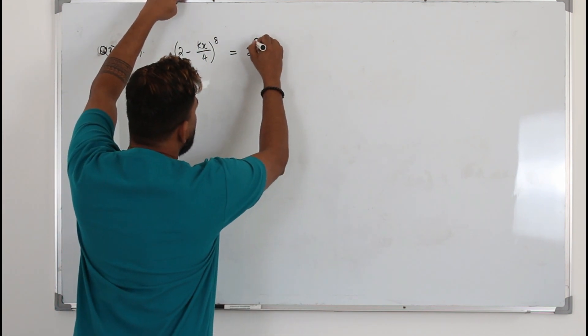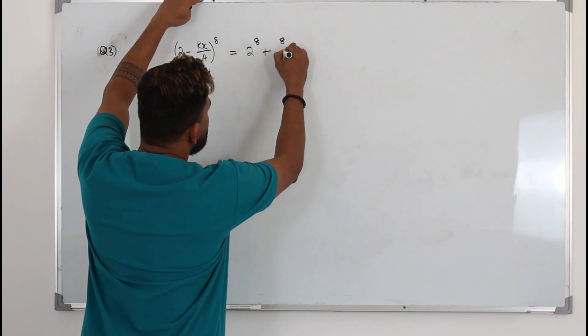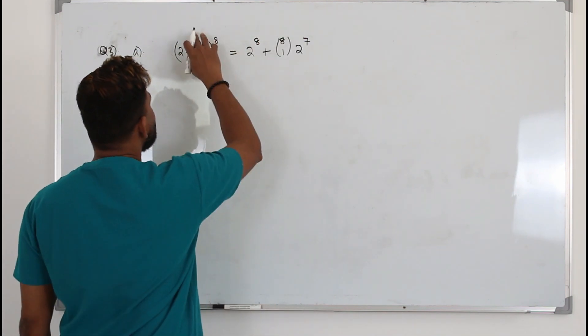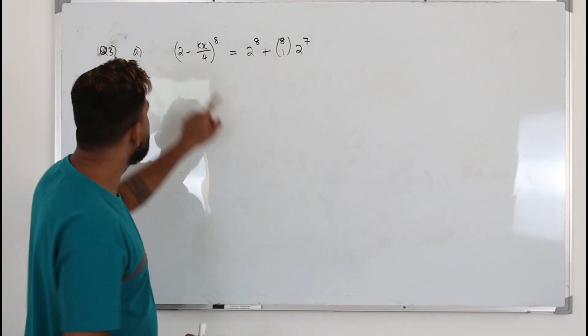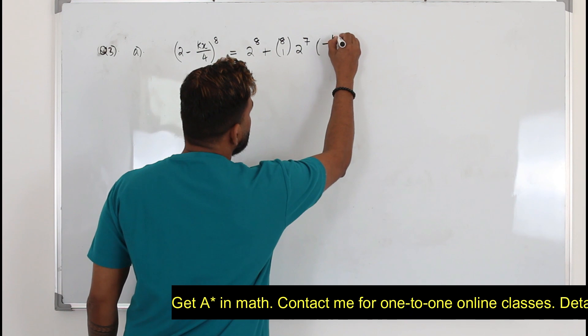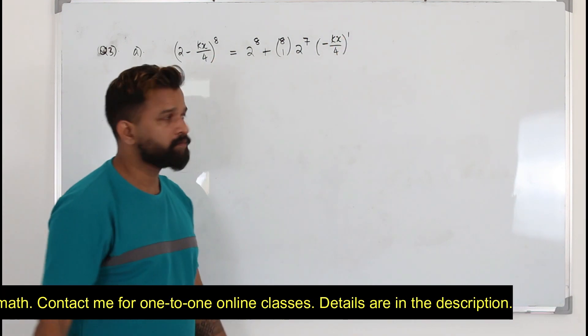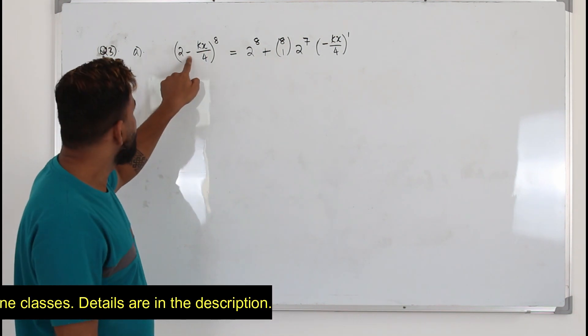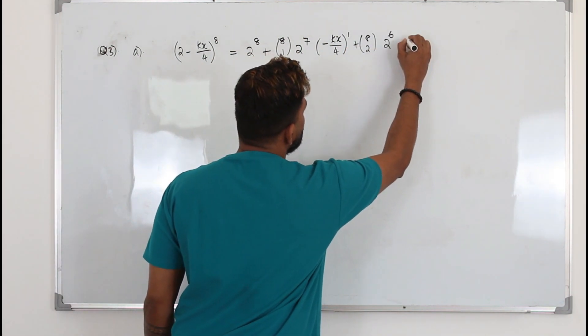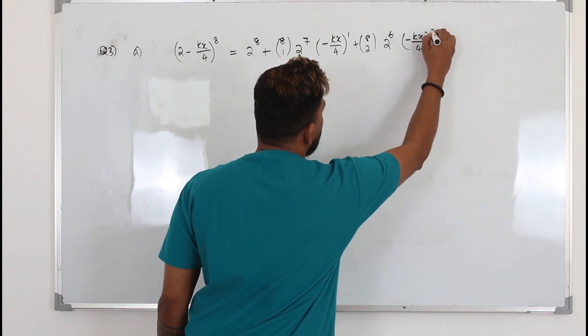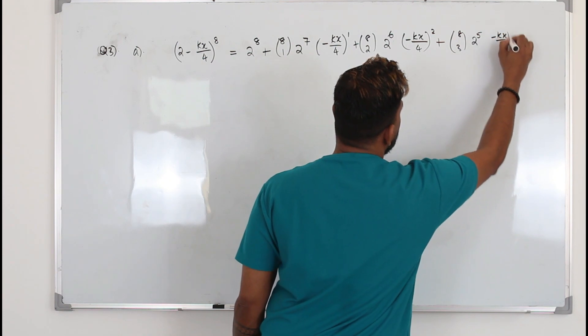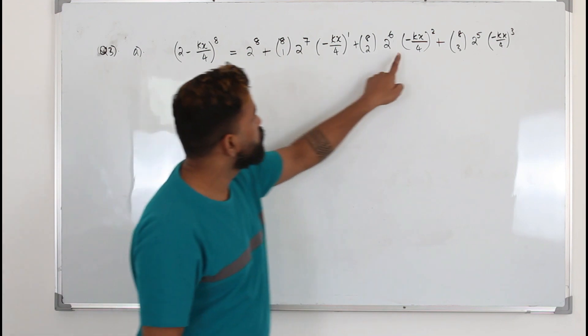So a^n plus nC1 a^(n-1)b, when you take the second term, remember you have to take it with the sign. If it is positive, just put kx/4. If it is negative, write it in a bracket: (-kx/4)^1. You need to always take the second term together with the sign. Now 8C2 times 2^(8-2) times b^2, and 8C3 times 2^(8-3) times b^3. That's 1, 2, 3, 4 terms.